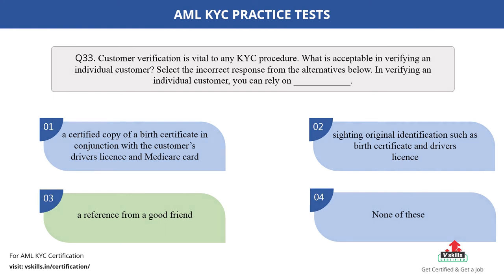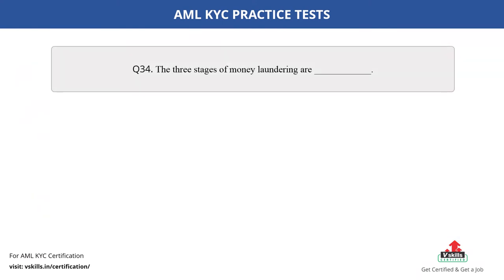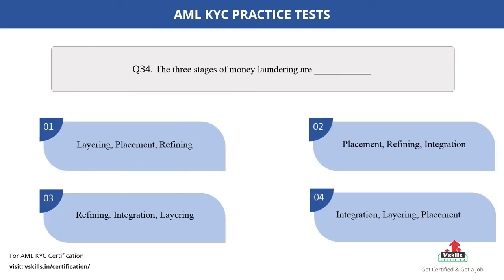Question number 34. The three stages of money laundering are dash. Fill in the blank. The options are: A. Layering, Placement, Refining; B. Placement, Refining, Integration; C. Refining, Integration, Layering; D. Integration, Layering, Placement. The correct answer is option D.